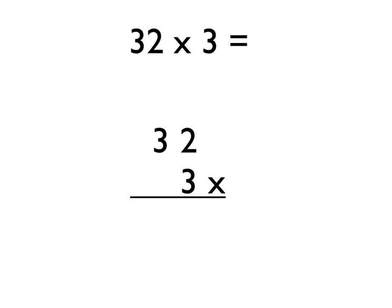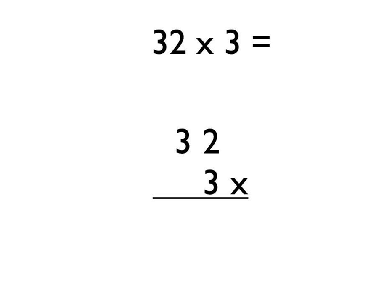Let's have a look at this first example: 32 times 3. The first thing to remember when doing short multiplication is that the bigger number must always go on the top of your workings. So you can see that I've laid out the 32 above the 3, and the 3 needs to be tucked up on the right-hand side under the 2. Now you just start multiplying every digit in the top number by the 3 below it. Starting from the right-hand side: 3 times 2 is 6, then 3 times 3 is 9. So the answer is 96.